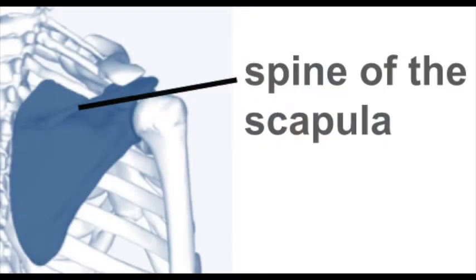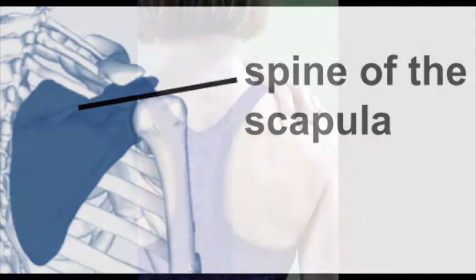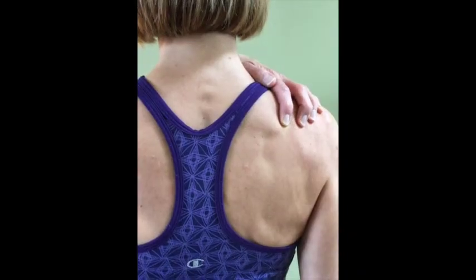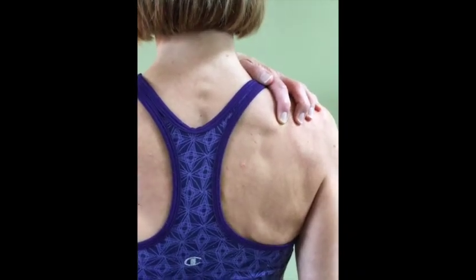The scapula is a wide, flat bone on the backside of the ribcage. This bony part here is called the spine of the scapula. You can feel it if you reach over your shoulder with one hand.